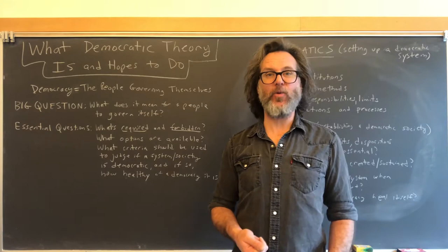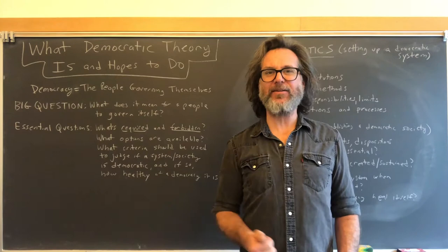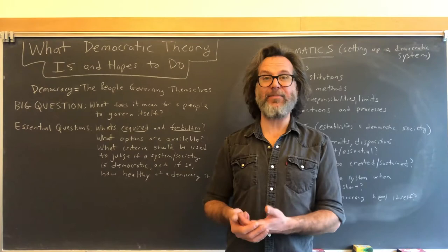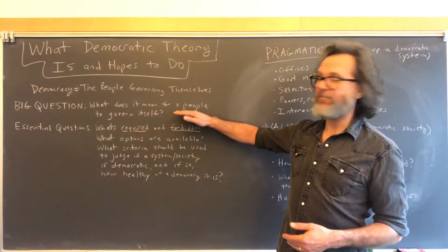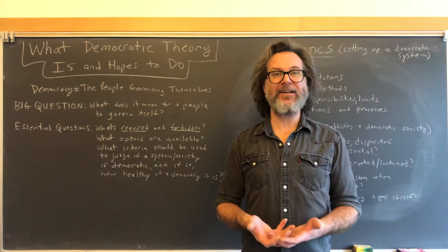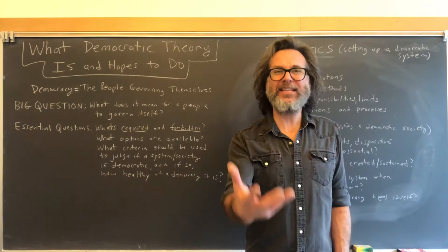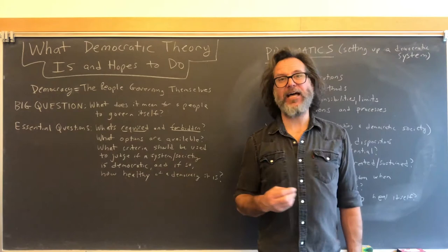If that were a simple question with a relatively straightforward singular answer, democratic theory wouldn't be a subject matter — it wouldn't be worthy of books or a 10-week class. The fact is that the question 'what does it mean for people to govern themselves' has many different possible answers. It's a much more complex question than it seems upon first glance. A lot of people want there to be a single answer, but democratic theory is really an exploration of the different possible ways to answer it.